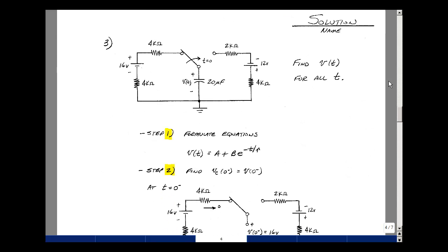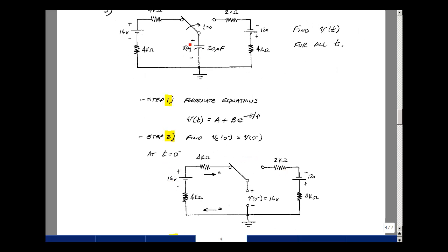For problem number three, given a one capacitor circuit with a single pole double throw switch, could you calculate the voltage across the capacitor for all time? And we have a six-step algorithm for solving this kind of problem. So the first step is to formulate the equations. So we have a first-order differential equation. Our initiating switch is at t equals zero, so our solution is some a plus b times e to the minus t over tau. Since the voltage across the capacitor cannot change instantaneously, we can use that as one of our conditions for solving for a and b.